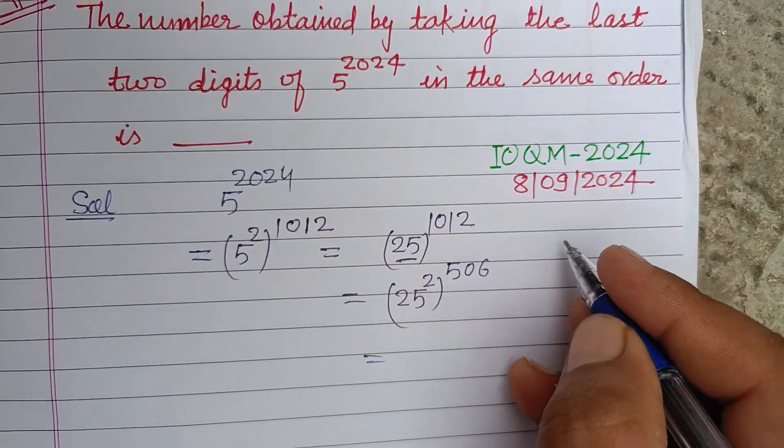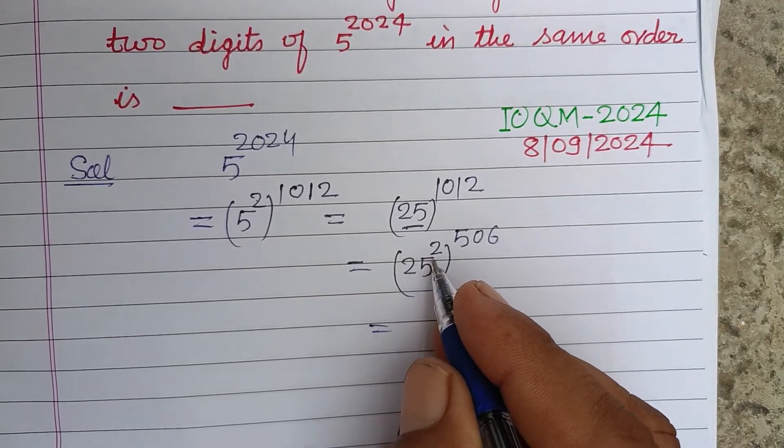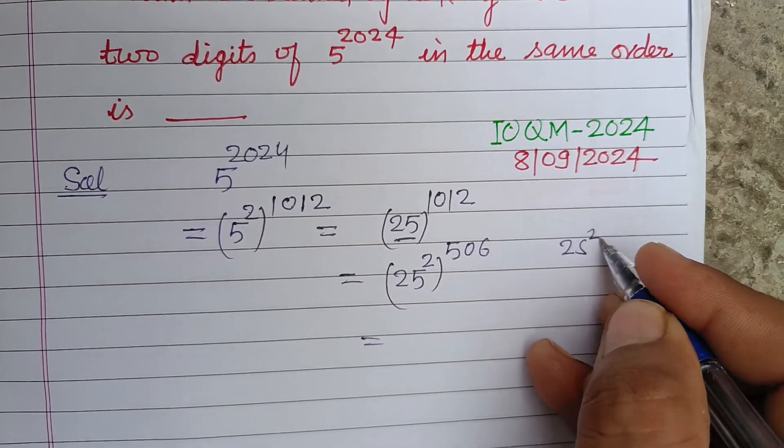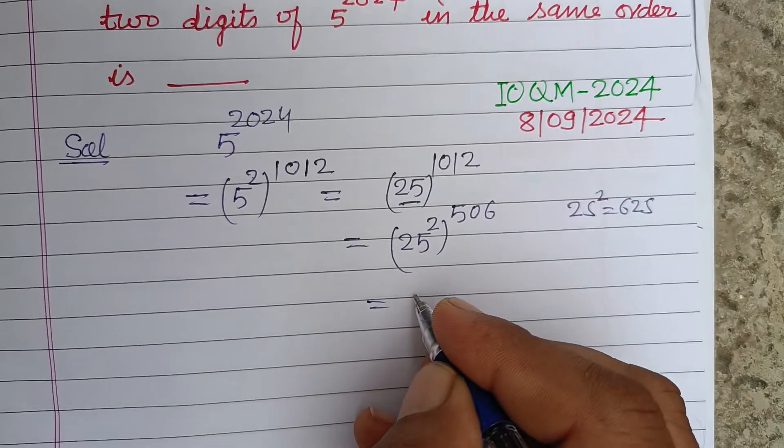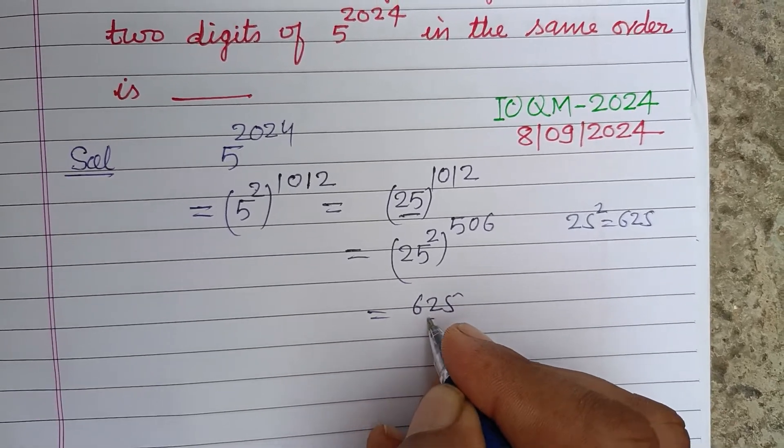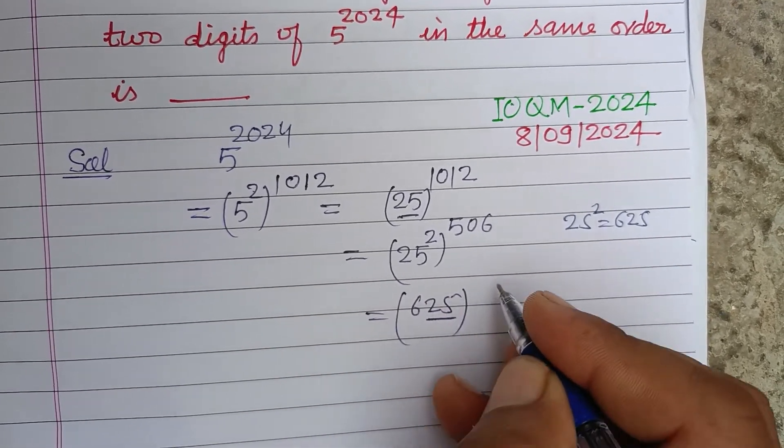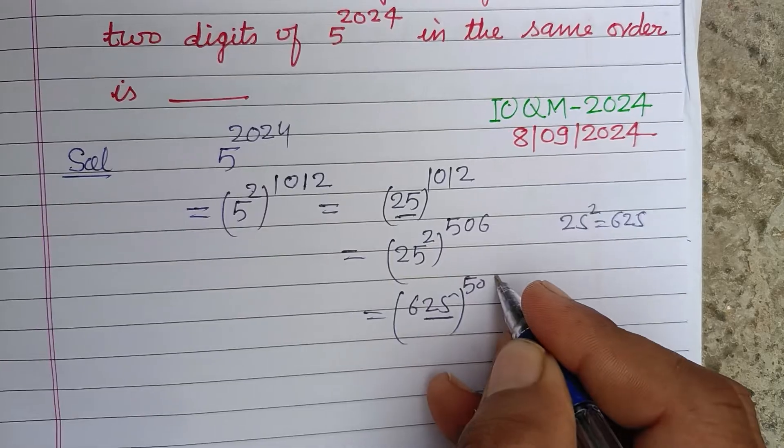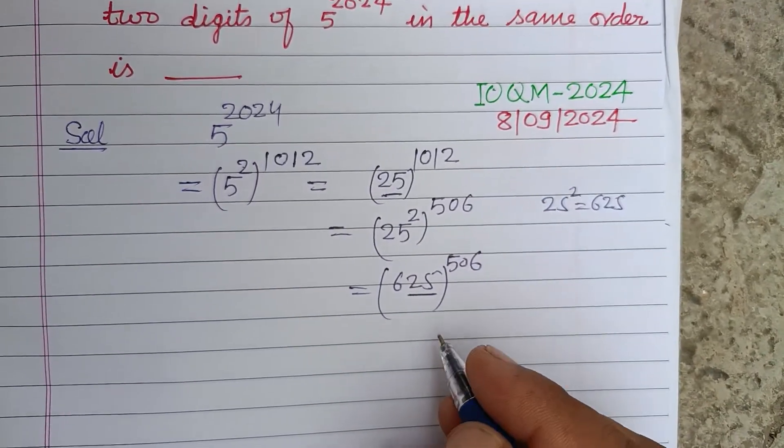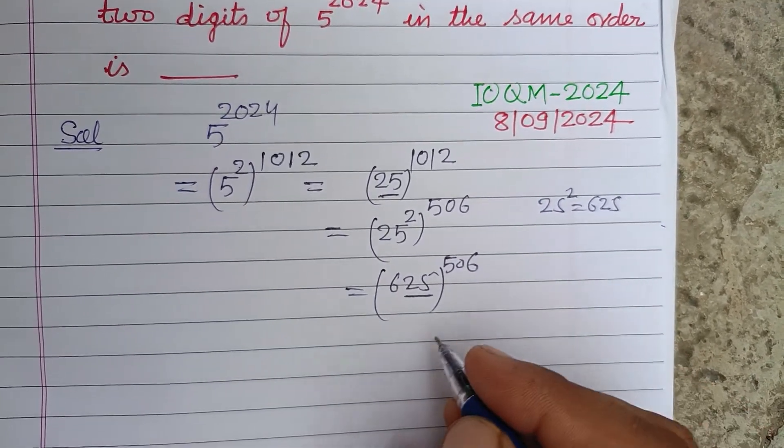25 squared equals 625, and the last two digits are also 25, okay? Similarly, when we make these powers, we always get 25 at the last two places.